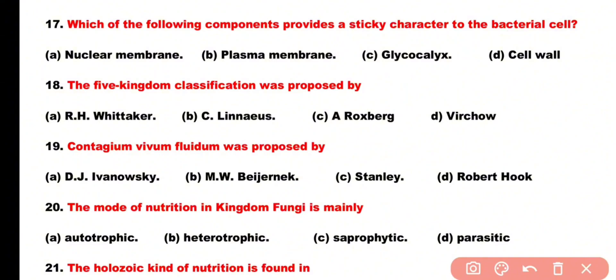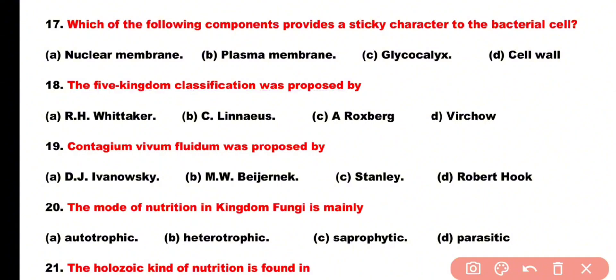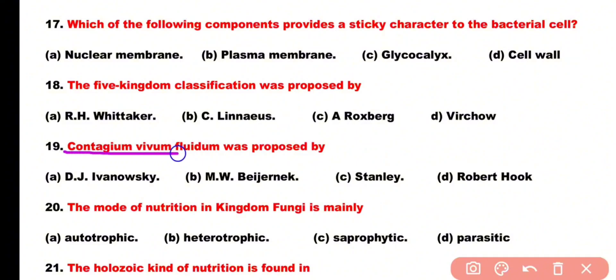Question number 18: Five kingdom classification was proposed by: R.H. Whittaker, Carolus Linnaeus, Roxburg, or Virtue. Correct answer is option A. Robert Whittaker proposed the five kingdom classification system. Question number 19: Contagium vivum fluidum was proposed by Iwanowski, Beijerinck, Stanley, or Robert Hooke.